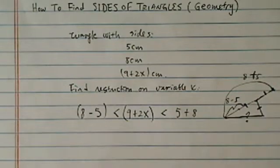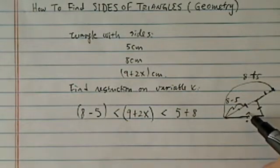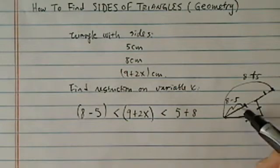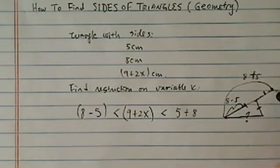And then this distance here is 8 plus 5. So very rudimentary, drawing a picture here, you can see this side in question has to be in between the shortest difference here, and it has to be shorter than the sum of the other two sides, but longer than the difference of the two sides.